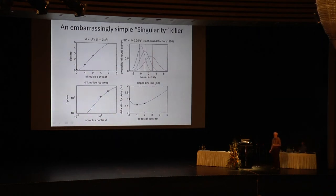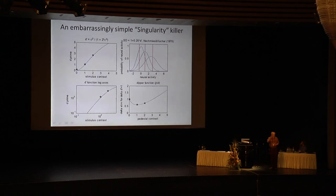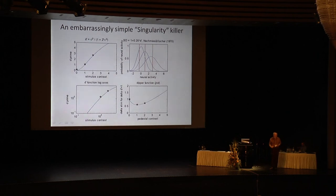Now comes maybe the most important part of my talk. What Nachmias, in 1970 — long forgotten — suggested is to do all experiments even with just a blank and a signal, just two things, but give a rating — give four buttons. Interrogate yourself: did I have a feeling that it was very visible or just a little bit visible? Give four buttons, not just two, and then you can do something called the ROC slope, and the slope of that tells you how much multiplicative noise there is.